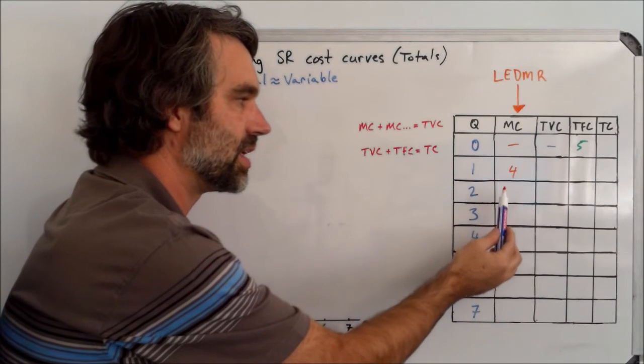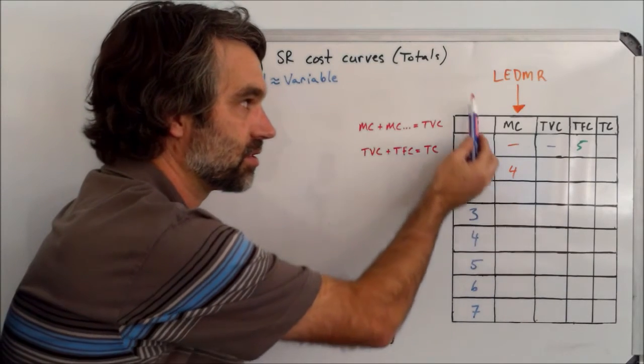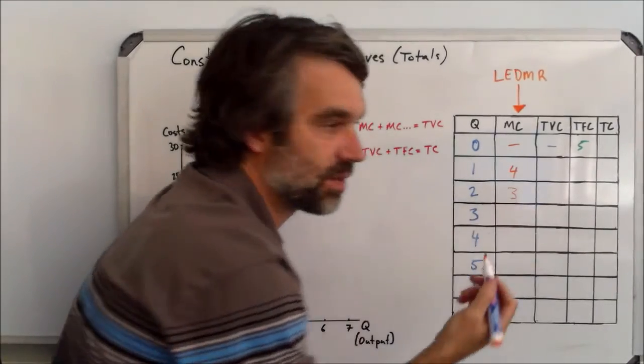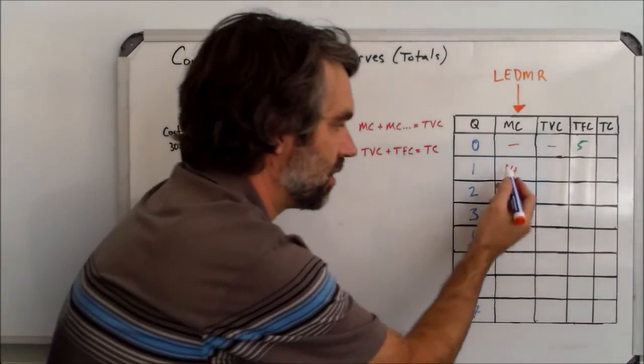Well, then when we go to produce the next one, the marginal cost, the eventually part, say that this will fall to something like three and then fall again, perhaps to two.